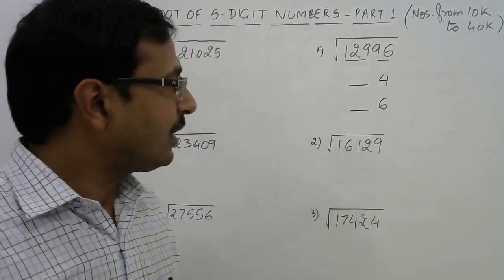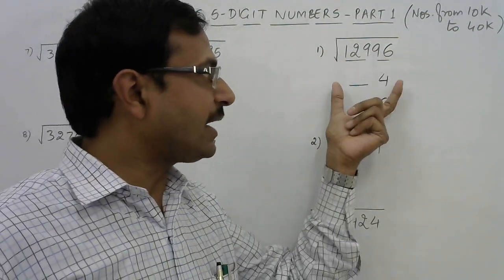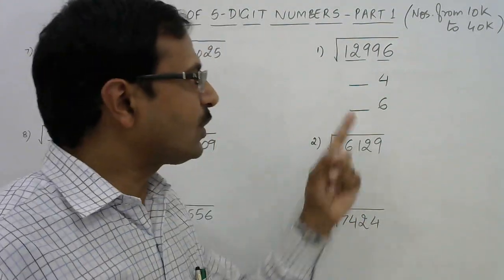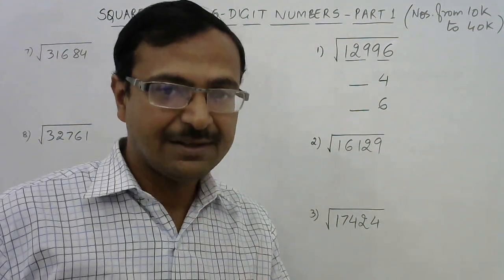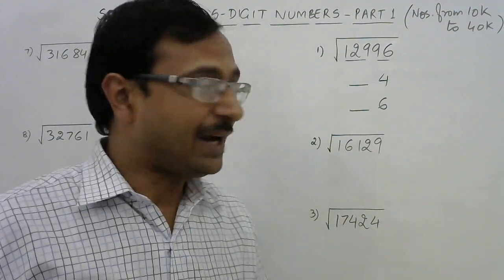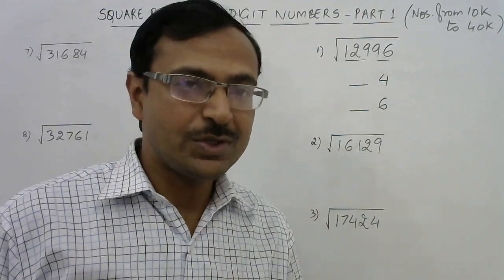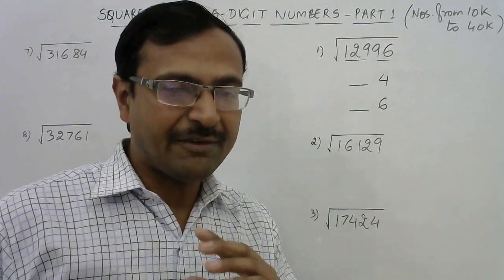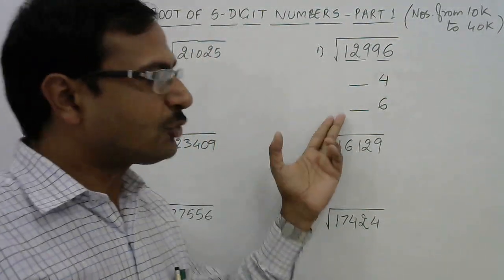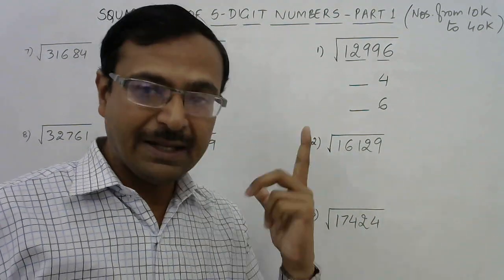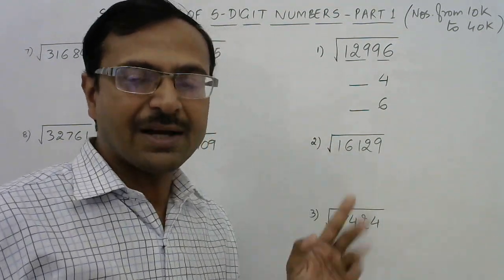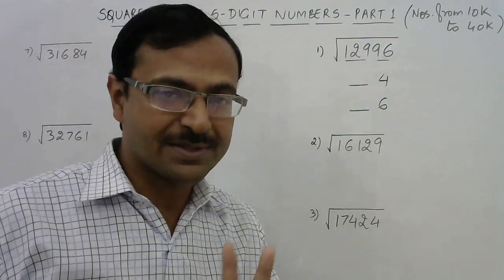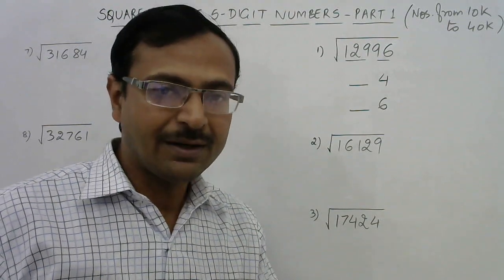So the square root of 12996 will either end with 4 or end with 6. Why? It is because the square of 4 is 16 which ends with 6, and the square of 6 is 36 which again ends with 6. So you need to be well aware of this fact. We will have two possible answers, and the remaining part of the answer will fortunately be the same in both cases, so we will have only two options out of which we have to choose one.